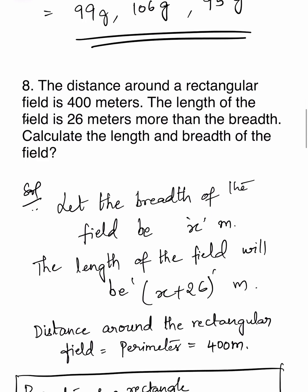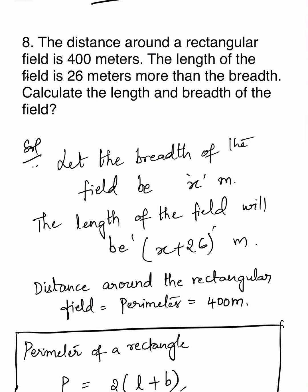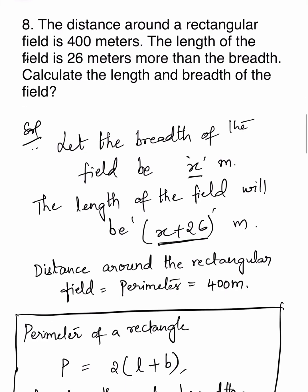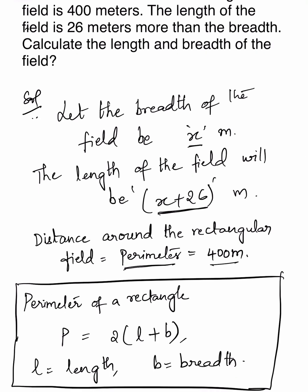The distance around a rectangular field is 400 meters. The length of the field is 26 meters more than the breadth. Calculate the length and breadth of the field. Let the breadth of the field be x meters. Then the length will be x plus 26, because it is given that length is 26 meters more than breadth. The distance around the rectangular field equals the perimeter, which is 400 meters.